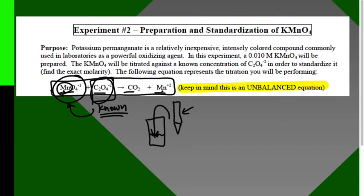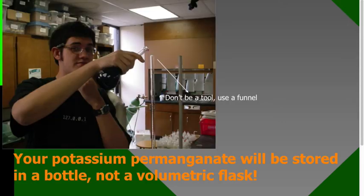Mn is colored when it's +7 but colorless at +2. So at the point where we see a purple color start to form, that means all our oxalate has been used up in the process. That is our equivalence point—we're looking for a light purple endpoint.